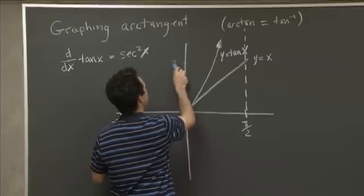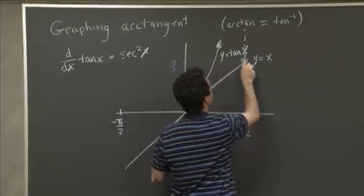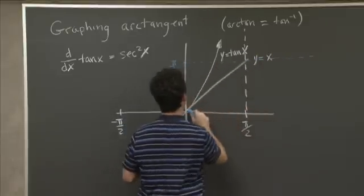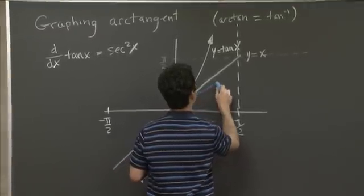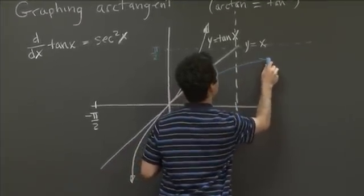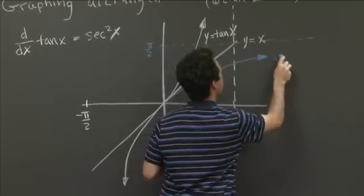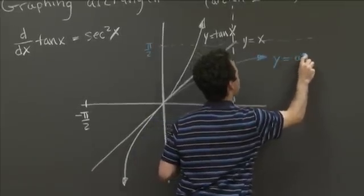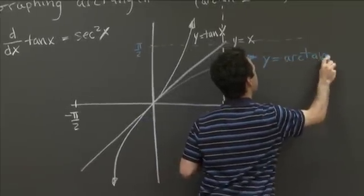That'll be the horizontal asymptote, and it'll come below. So this is y equals arctan x.